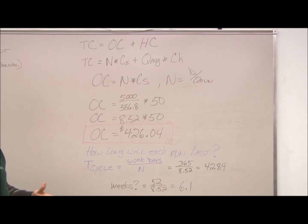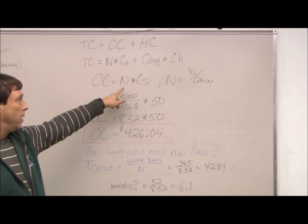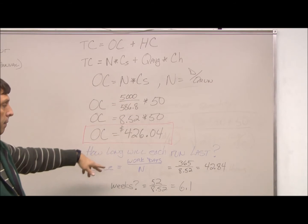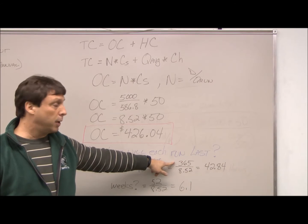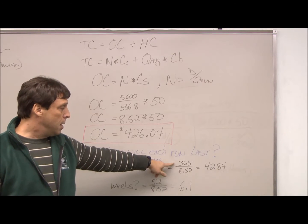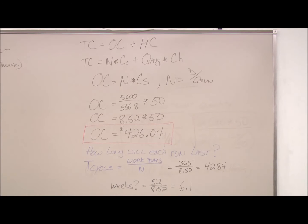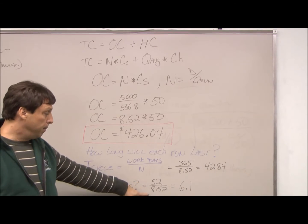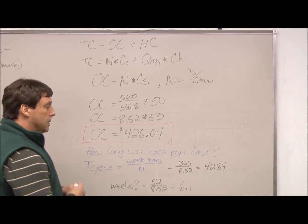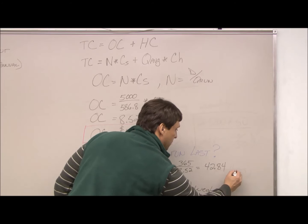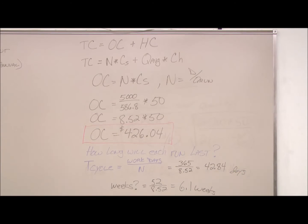Another question that typically comes up is, how long will each production run last? It's also called cycle time, so T-cycle right here is just simply the number of work days divided by our N, which is the number of orders. In this example, we're using a year. We're making believe we're working 24-7, 365 days a year. So 365 divided by our N is 42.8 days. I could ask the same, or someone could ask the same question of, well, how many weeks will it run? Of course, we know there's 52 weeks in a year. We divide that by N, so this would be 6.1 weeks versus days. So when people ask you about cycle time, one trick question is always to go back between days and weeks.